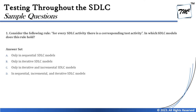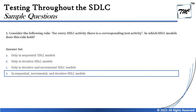Looking at the options: A says only in sequential SDLC model — incorrect. B says only iterative SDLC models — no, it's not limited to that. C says only iterative and incremental — again, no. Option D says in sequential, incremental, and iterative SDLC models, which covers all together. So the right answer is D.